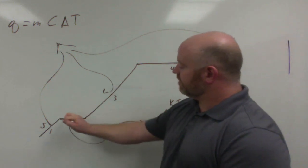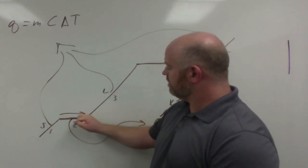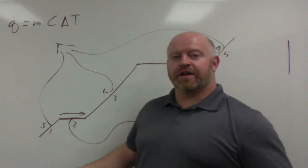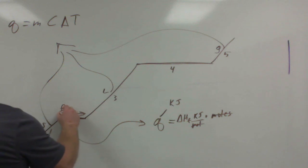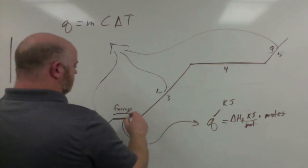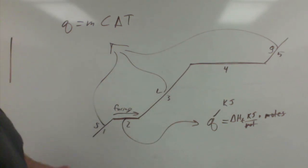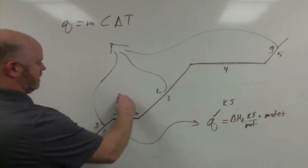Now, when we're going this direction on the heating curve, we're putting energy in. So we're actually melting or we're fusing is a fancy term for melting. So when we're putting energy in, our delta H of fusion will be positive.